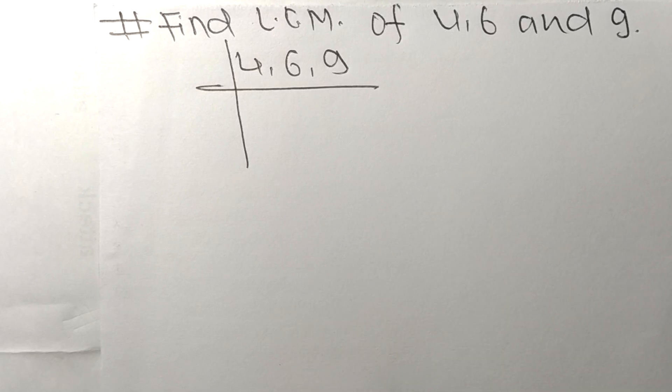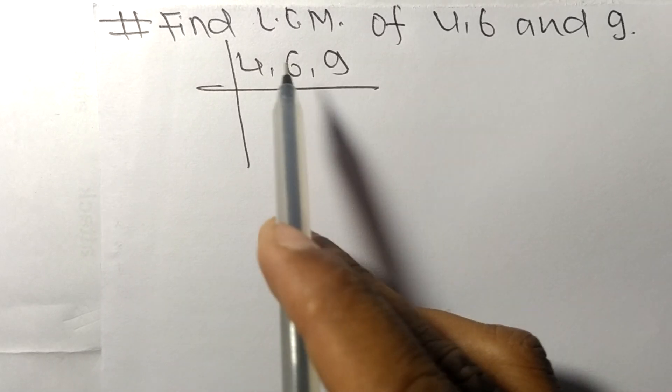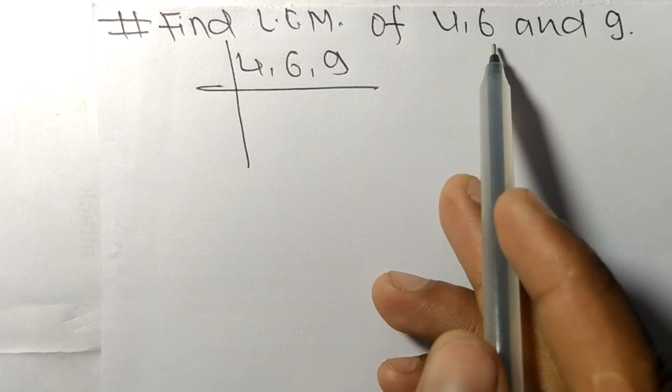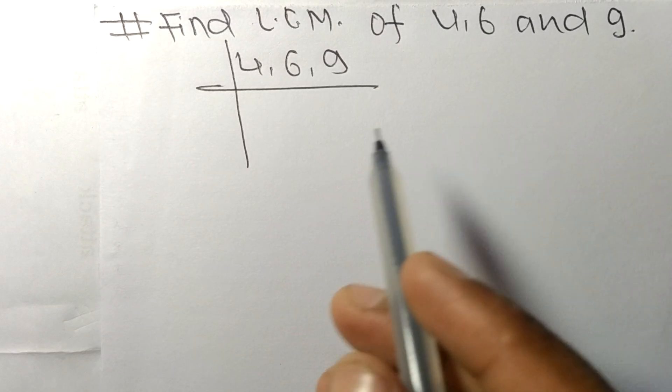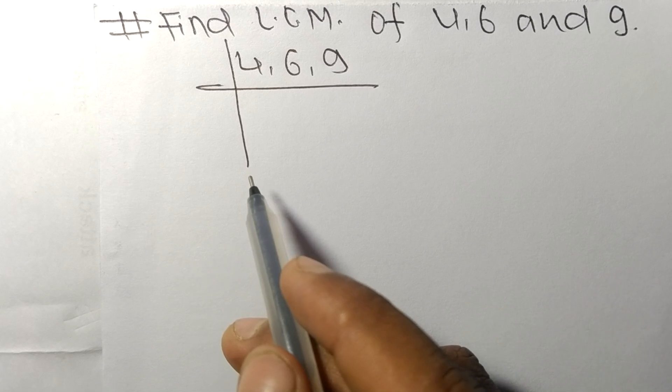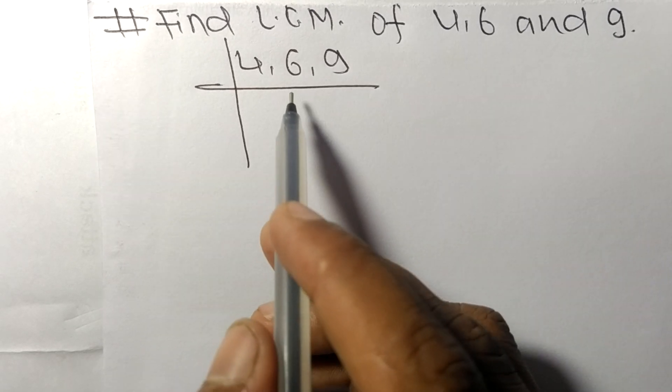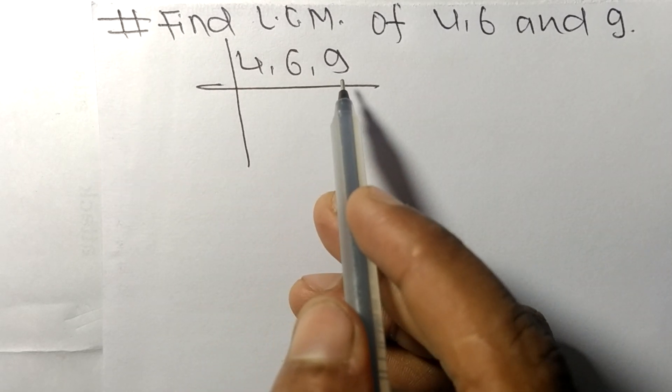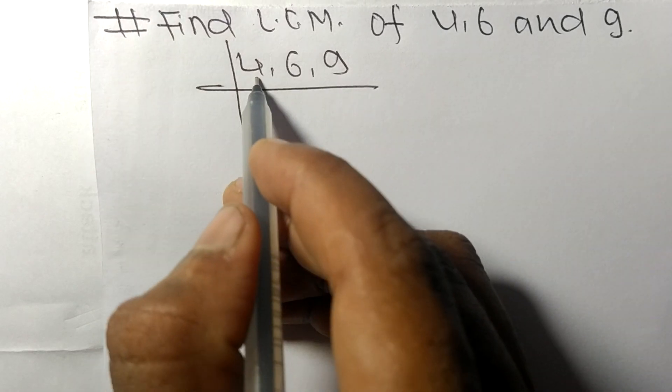So today in this video we shall learn to find the LCM of 4, 6, and 9. To find LCM we have to choose the lowest number that can exactly divide any two of these numbers. So 4 and 6 are exactly divisible by 2.